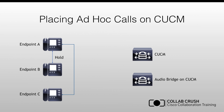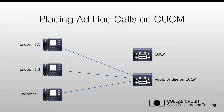If the user behind endpoint A presses the conference button a second time, it will put endpoint C on hold and open a new communication to the CUCM, saying they want to merge these two held calls into a multi-point call. The CUCM selects a media resource based on endpoint A's settings, then does a call setup to transfer all three endpoints to the audio bridge. The audio bridge processes the audio and sends it out to each endpoint so everybody can hear each other.